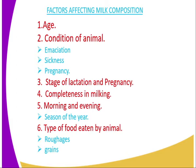Now we can look at the factors affecting milk composition. The first one is age. A young animal which has recently parturated means the composition of the milk components is normally at a high percentage. For example, the butterfat content for a young lactating cow is higher compared to an old lactating cow. Age is therefore a factor which influences milk composition.